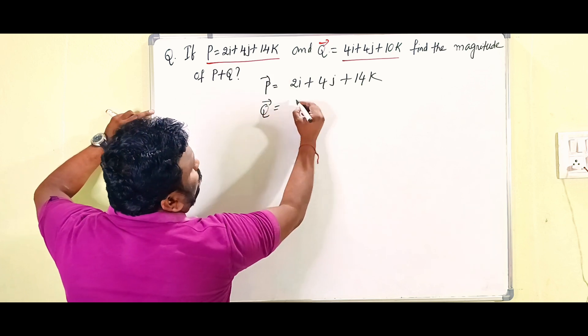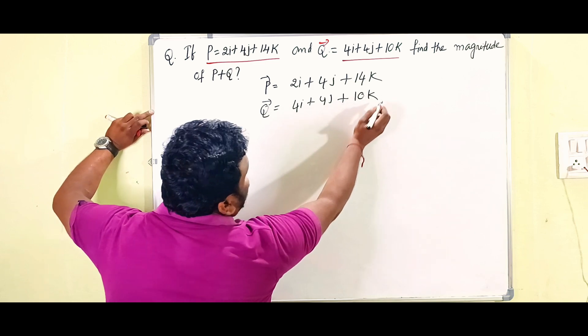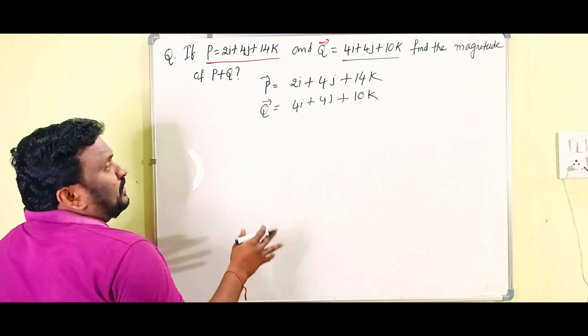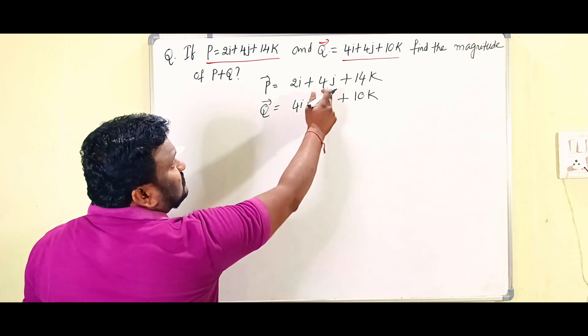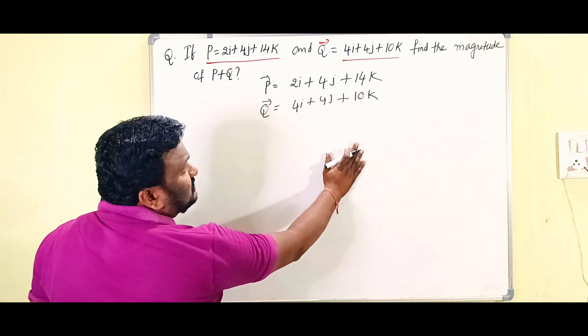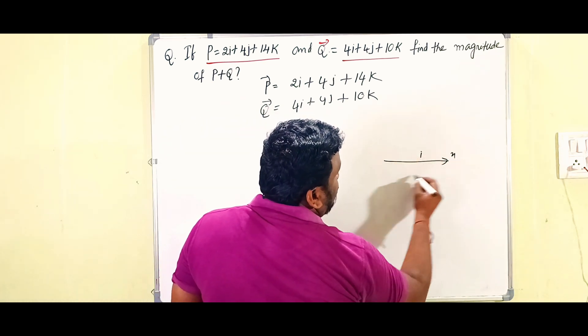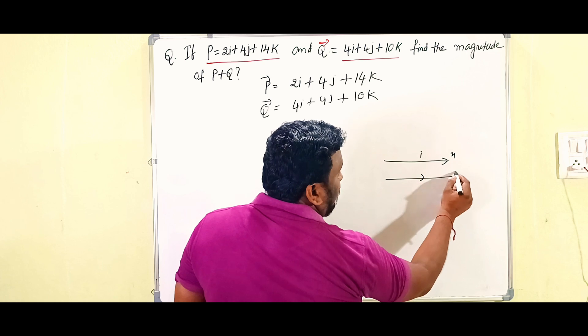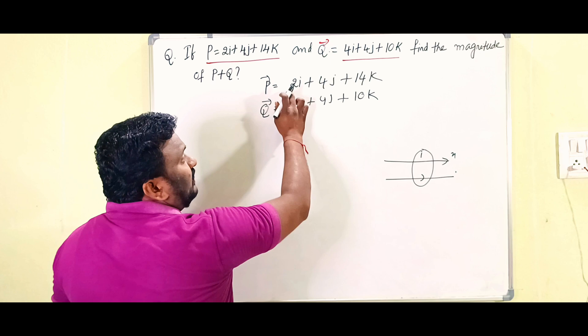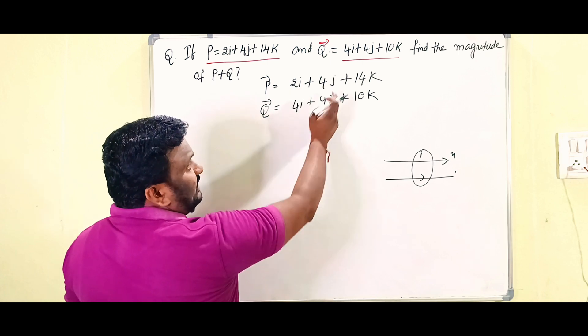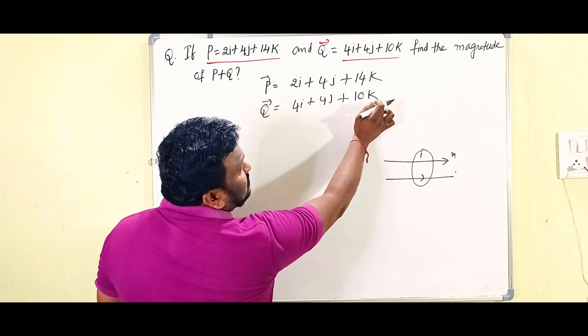So children, according to the properties of vectors we have to add only the i components, j components, and k components. Why? Because here i represents the x-axis, again one more i represents also x-axis. These two are parallel. When these two are parallel we can add the components of i only. Similarly, components of j we have to add, similarly components of k we have to add.